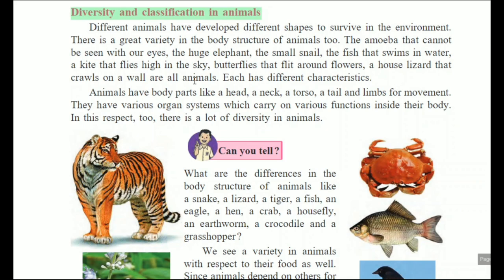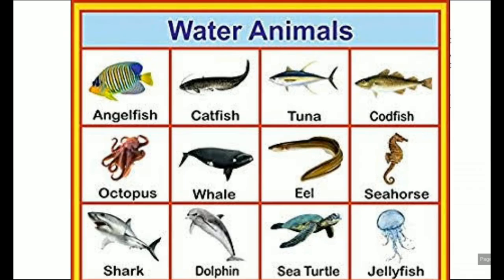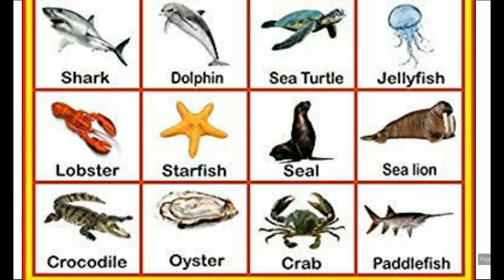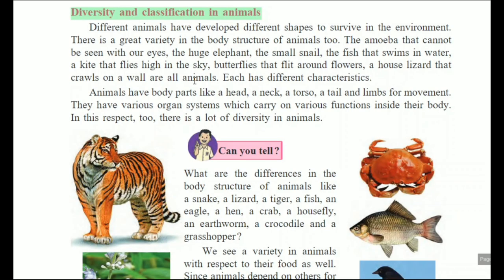A small snail, fish that swim in water — fish are aquatic animals because they live in water only. But many other animals also live in water: starfish, tortoises, and different species are there which can live in water, therefore they are called aquatic animals. Butterflies flit around flowers, and a house lizard crawls on the wall.